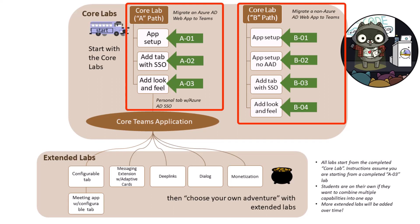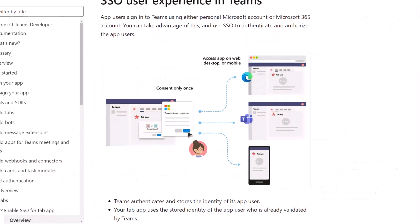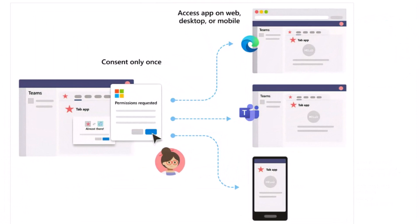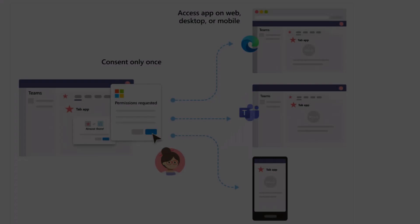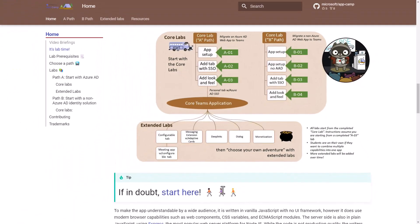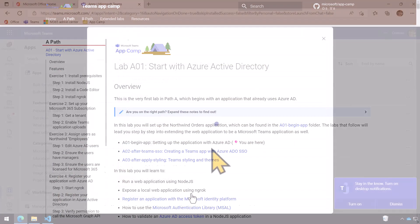That's because our destination is to get to Azure Active Directory single sign-on. But the steps are a little different if you've already got Azure AD or if you need to link identities from another system. If in doubt, start with lab A01 — it's your shortest path to getting a Teams application up and running.